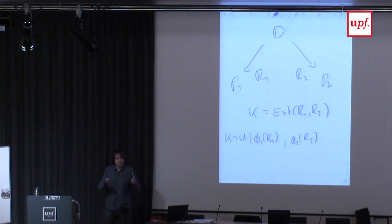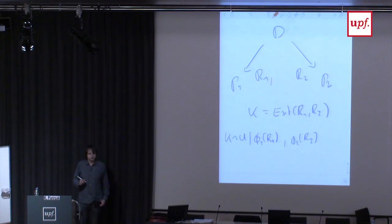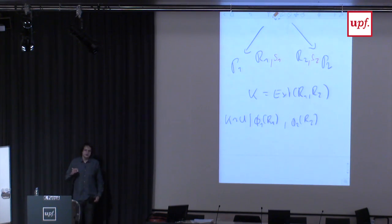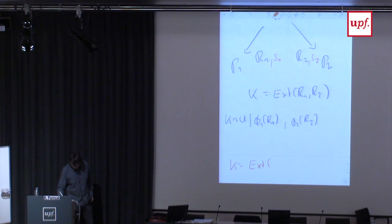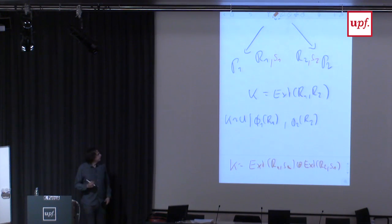A simple trick to make reconstruction efficient: player P1 not only has this huge share R1 but also a short seed S1, and player P2 has a short seed S2. To reconstruct the secret, we use a regular extractor. The key K is defined as: extract from R1 using seed S2 (the seed from the other player), XOR'd with something, and symmetrically extract from R2 using seed S1.